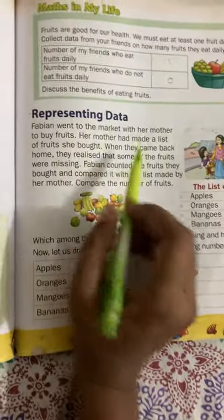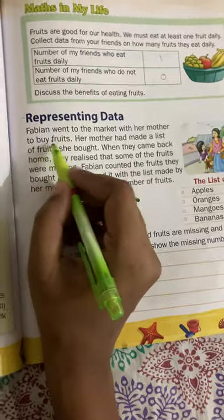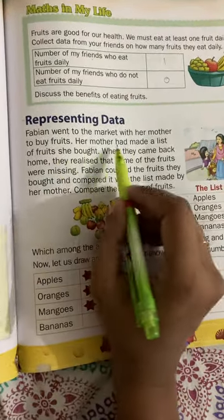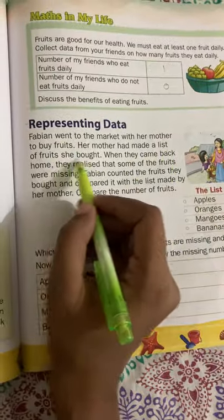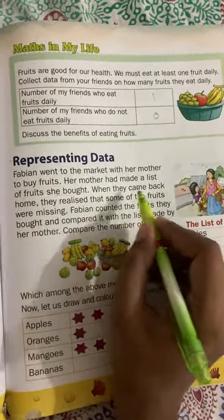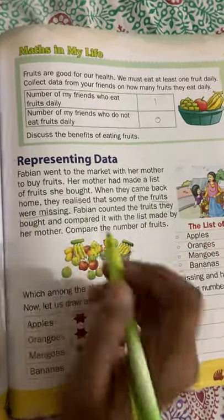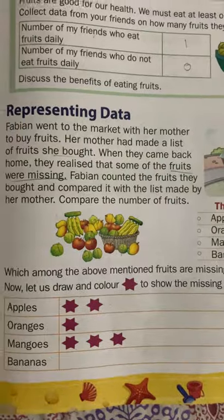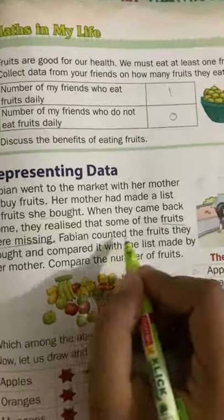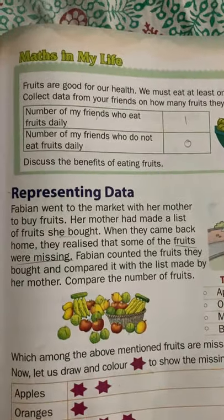Now, representing data. Fabian went to market with her mother to buy fruits. Her mother made a list of fruits she bought. When they came back home, they realized some of the fruits were missing. Fabian counted the fruits they bought and compared with the list made by her mother.